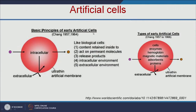Let us see the basic principles of early artificial cells. These artificial cells are made up of ultra-thin artificial membranes, having both intracellular and extracellular environments. The content you want to encapsulate will be inside the artificial membrane. This membrane is permeable — it will allow substrates to enter and can also release the product.